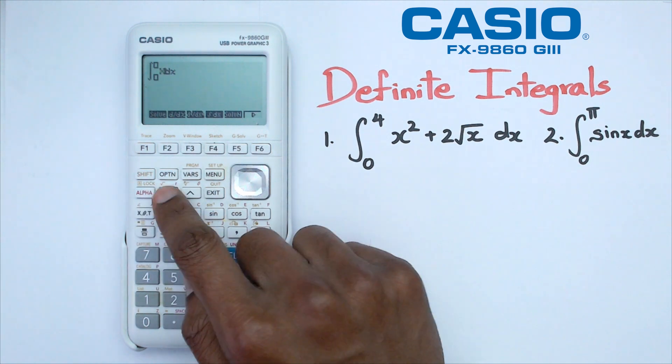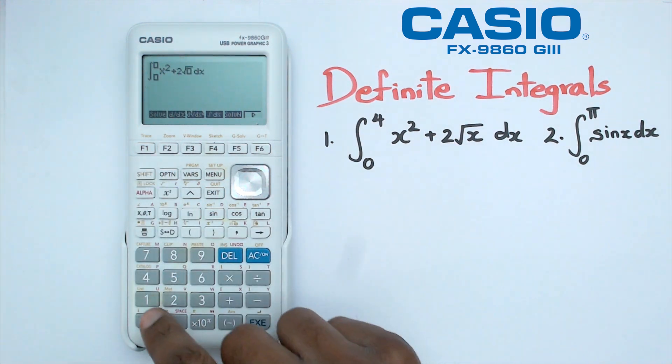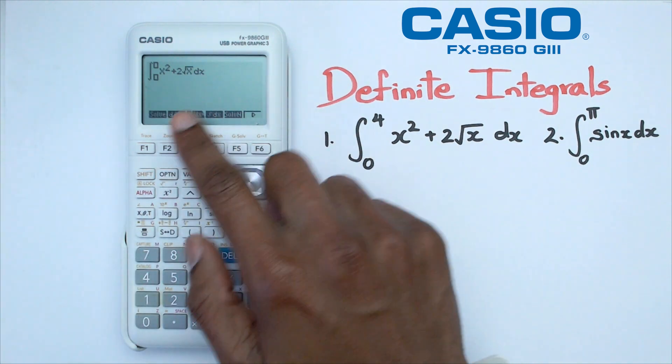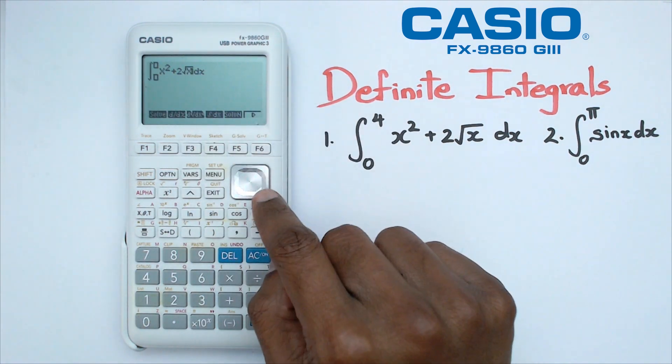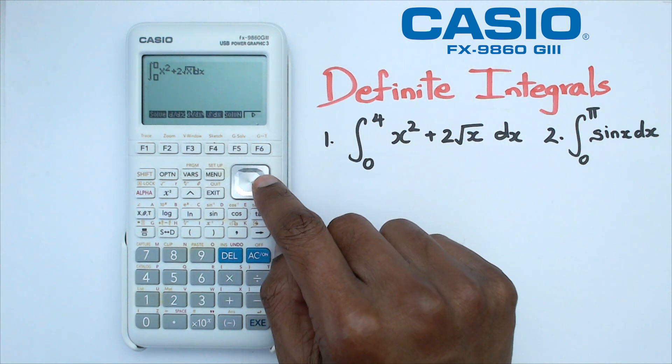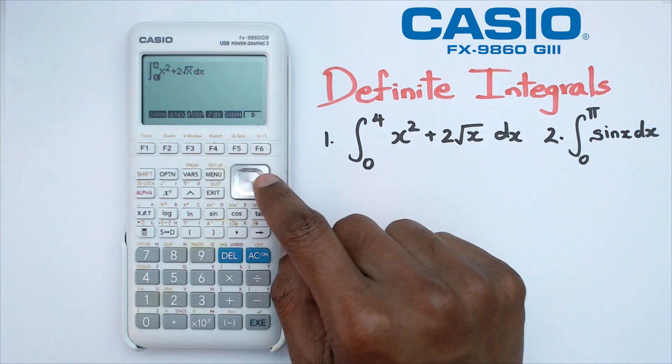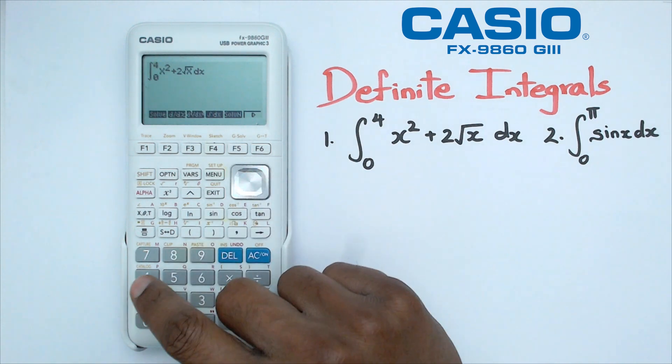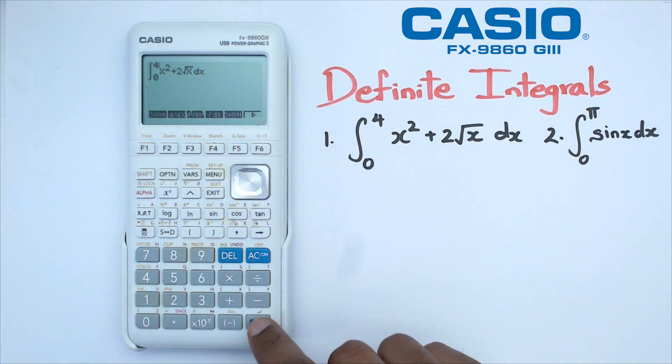We're going to enter x² + 2√x. This is the original function, not integrated yet. Then use the cursor to enter the bounds: lower bound is 0, upper is 4. Once you put in your upper limit of 4, click exe, and it gives an answer of 32.